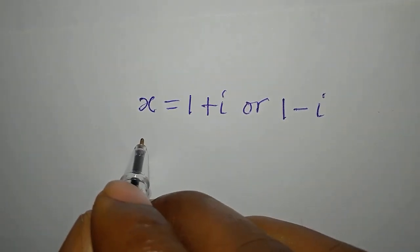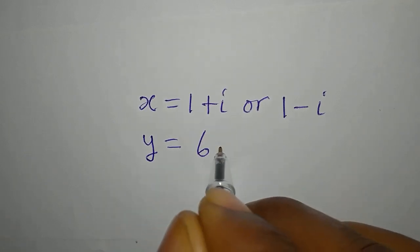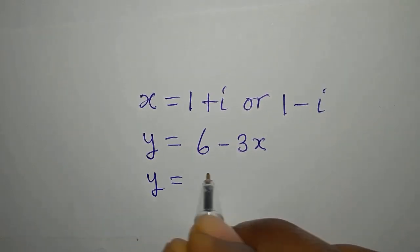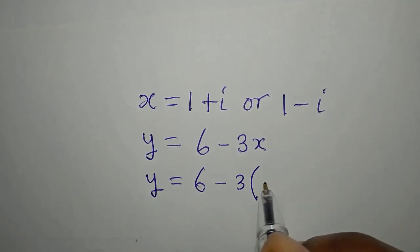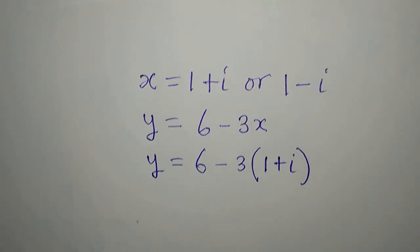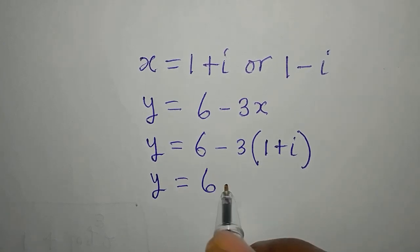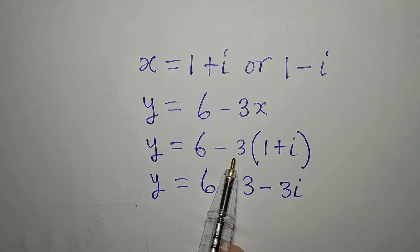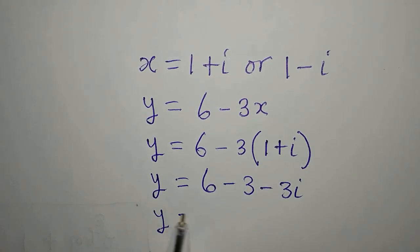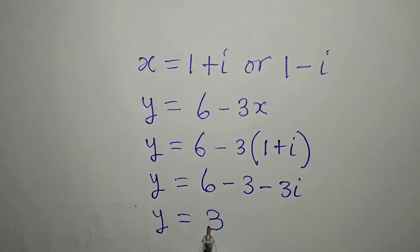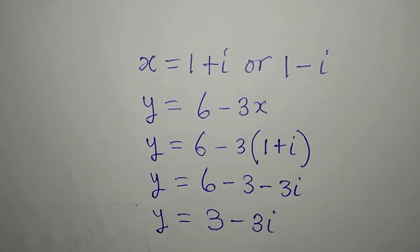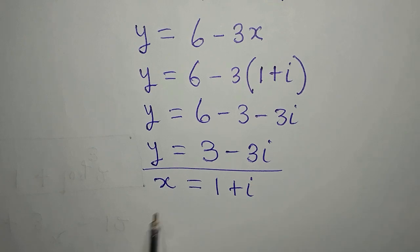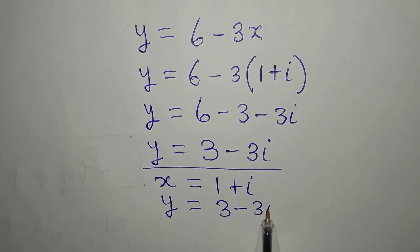Our equation 3 is y equals 6 minus 3x. I'll pick the first value of x, so y equals 6 minus 3 times the bracket 1 plus i. This gives y equals 6 minus 3 minus 3i, because negative 3 times 1 is negative 3 and negative 3 times i is negative 3i. Therefore y equals 3 minus 3i. So when x equals 1 plus i, y equals 3 minus 3i.